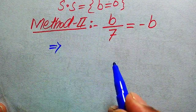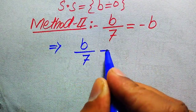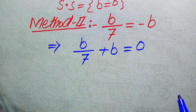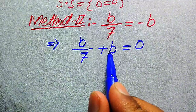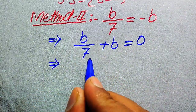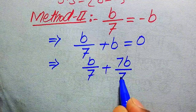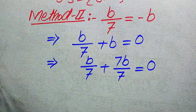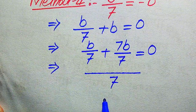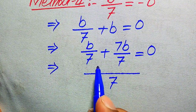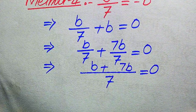In the second method we use another technique. We move minus b from the right hand side to the left hand side, giving b divided by 7 plus b equals 0. We use the LCM technique to find the roots. The denominator of the first term is 7 and of the second term is 1, so we make them the same by multiplying and dividing the second term by 7, giving 7b divided by 7. Now both denominators are the same, so the LCM is 7. Dividing gives b plus 7b equals 0.